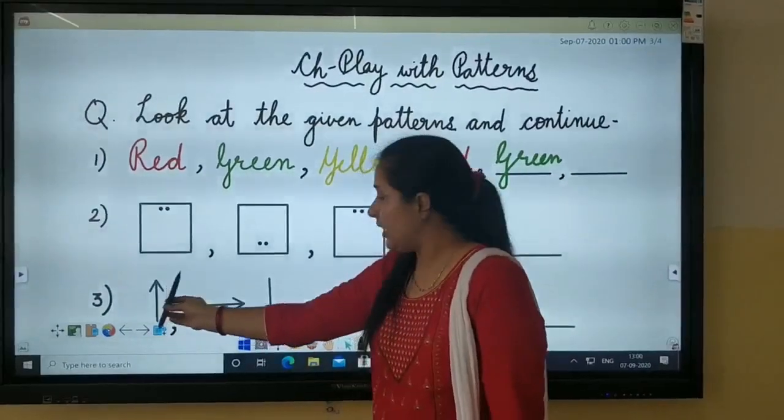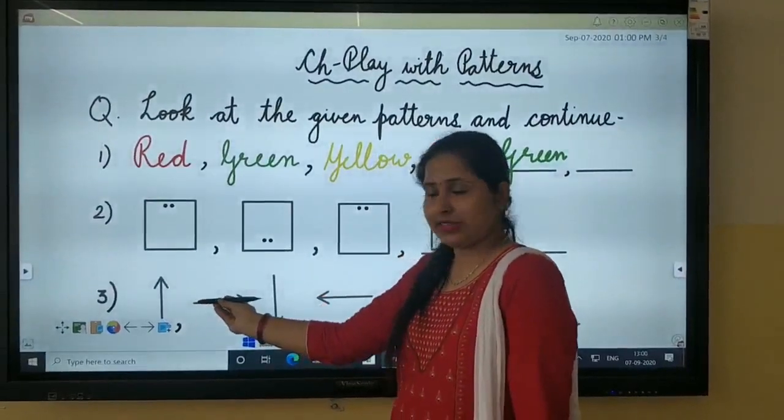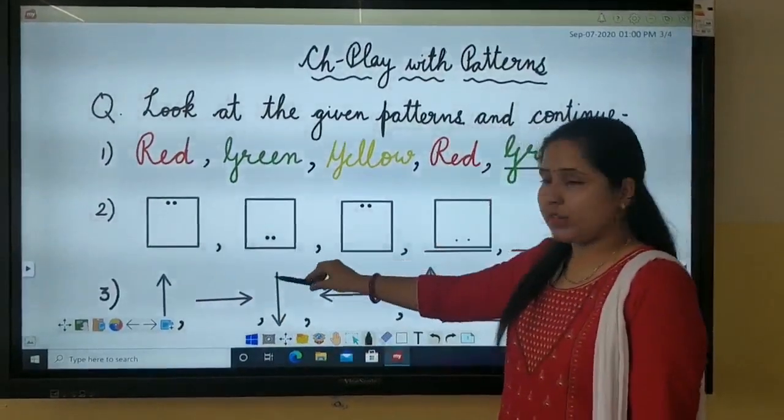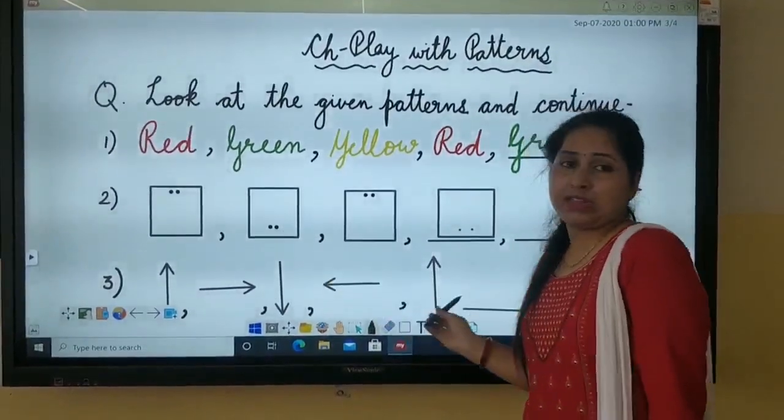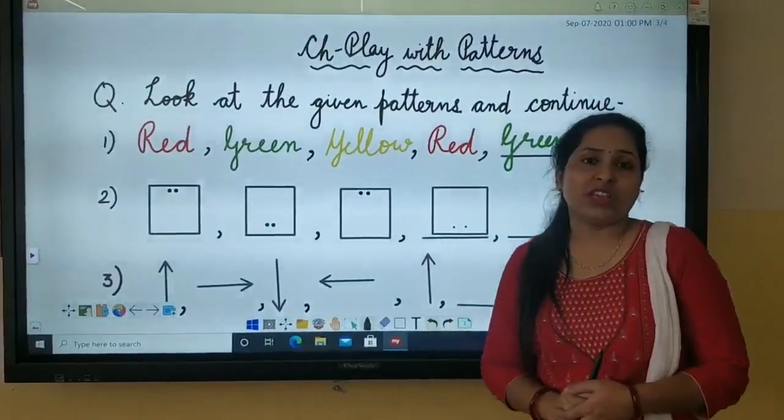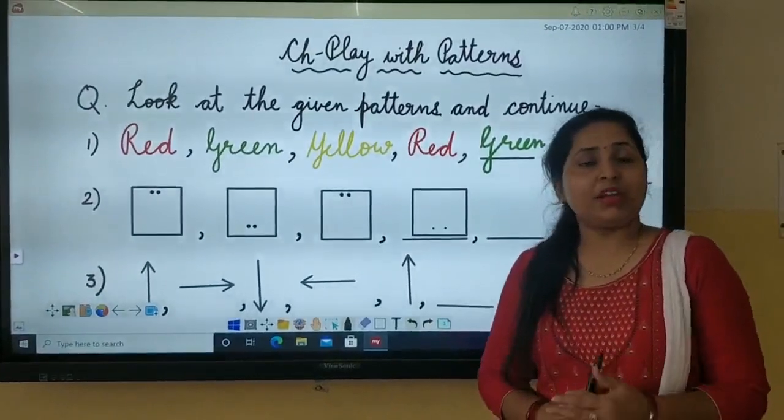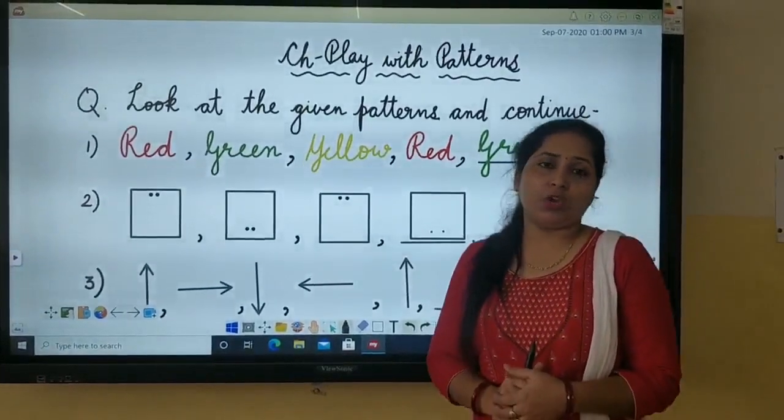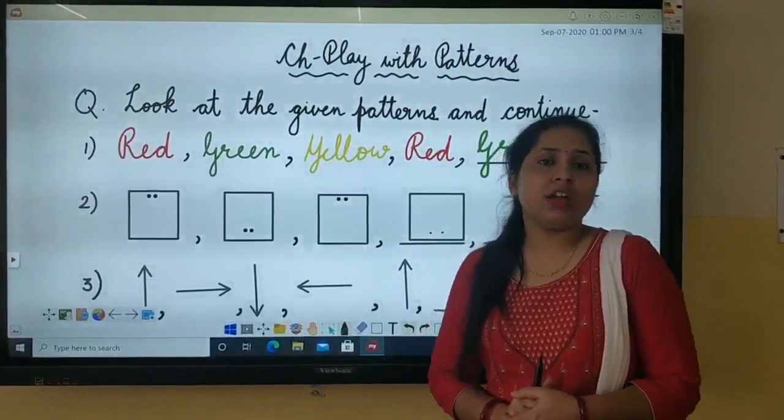But here you have to understand one thing that these arrows are moving in a particular pattern. What is the pattern? First it is up, then right side, then down, then left, then up. So in these patterns, these arrows are changing their position. These are being repeated but using a particular rule that is to change their position.